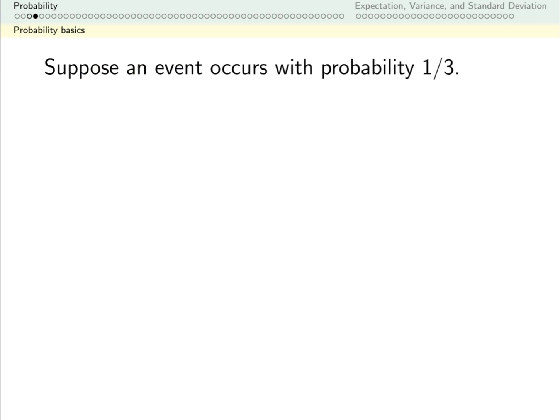If an event occurs with probability 1/3, similarly, if I run this event a whole bunch of times, I expect out of the total number of times, roughly 1/3 of them it occurred.